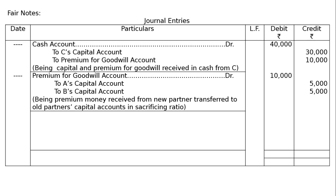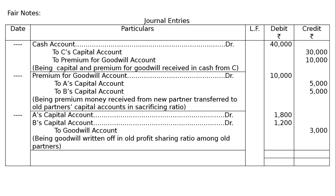Third entry — goodwill is already appearing in the books of A and B. Since goodwill is already appearing in the old balance sheet, it will be written off to old partners' capital accounts in the old ratio of A to B. A's capital account debited Rs. 1,800; B's capital account debited Rs. 1,200; To goodwill account Rs. 3,000. Being goodwill written off in old profit sharing ratio among old partners.